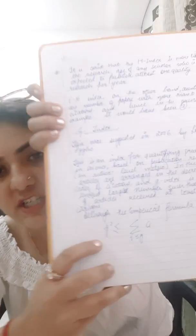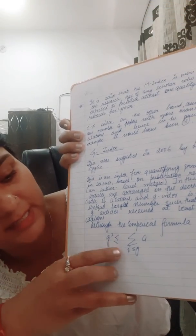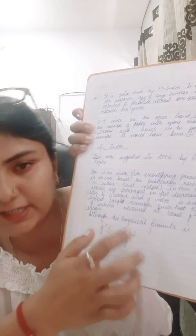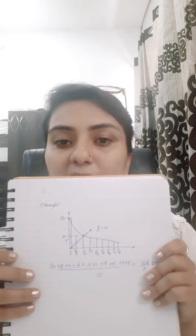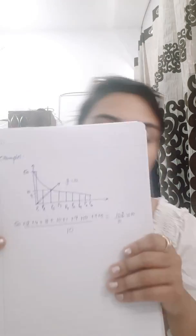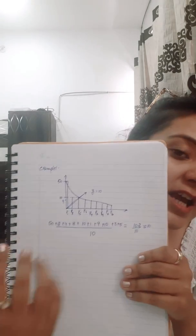G-index is an index for quantifying productivity in science based on the publication record, at the author's level. There is a formula: g² ≤ average of citations. Although there is a formula, you don't have to memorize it. What you need to do is arrange the papers by citation count — Google Scholar and various other online tools will do this for you.